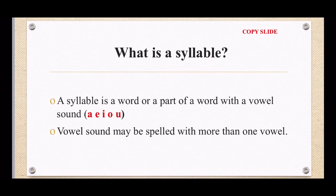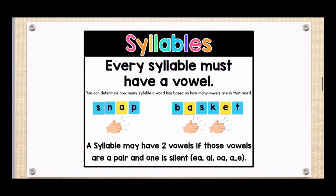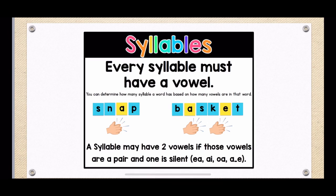Next, what is a syllable? A syllable is a part of a word or a word with a vowel sound. We know our vowels are A, E, I, O, U. A vowel sound may be spelled with more than one vowel. Please remember to copy the slide.